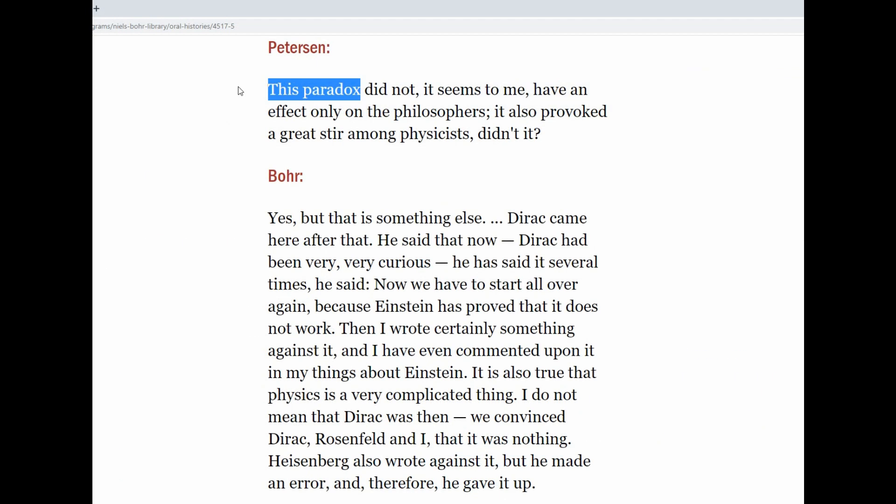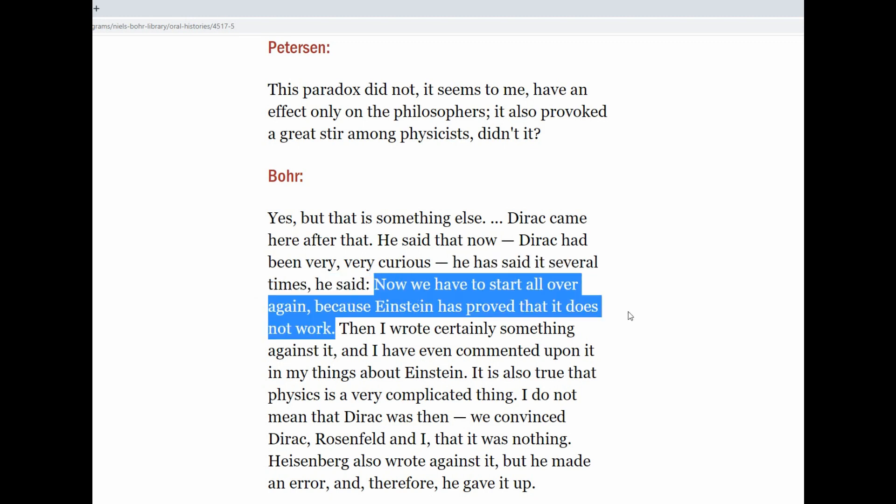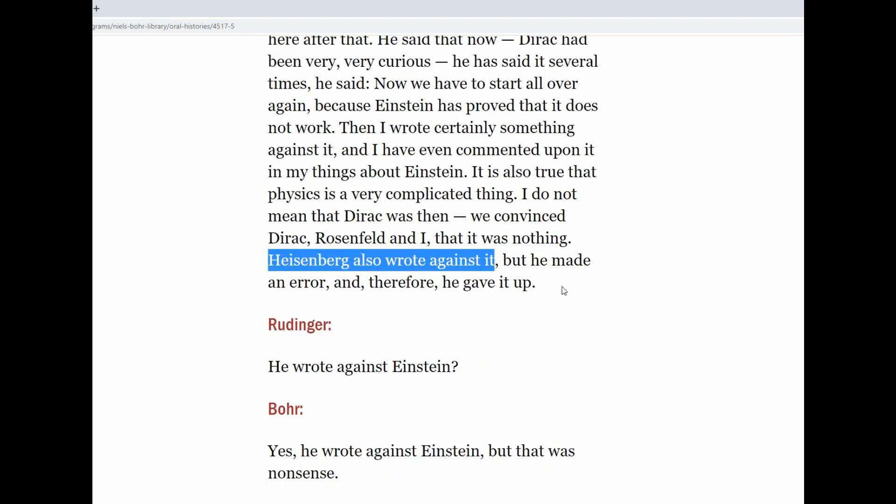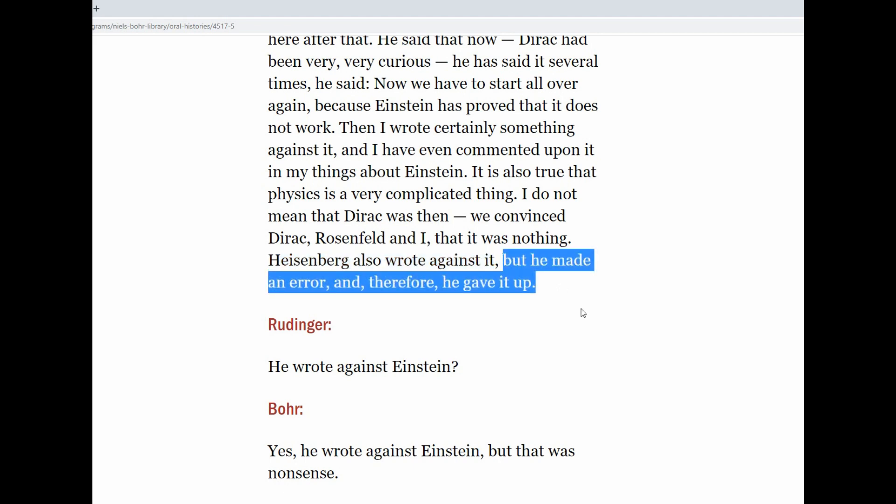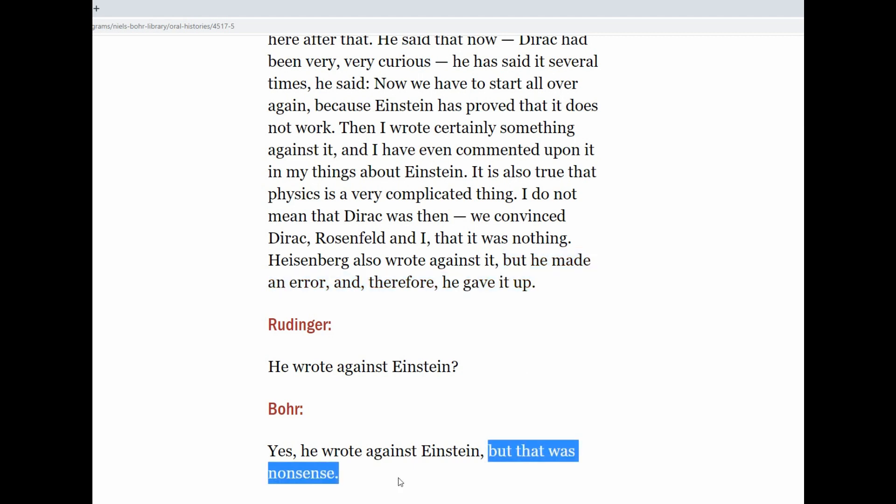So the interviewer commented that this paradox provoked a great stir among physicists. Dirac said several times, 'Now we have to start all over again because Einstein has proved that it does not work.' He also mentions that Heisenberg tried to write something to refute Einstein, but he made an error and therefore had to give it up. And he says it again and calls Heisenberg's attempt nonsense.